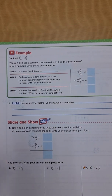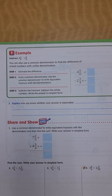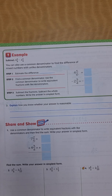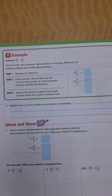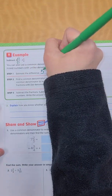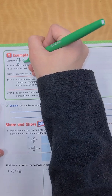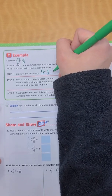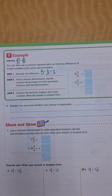This one's subtracting. I feel like the addition is a little bit easier than subtracting — that's just my personal opinion. So we have 4 and 5 sixths minus 2 and 3 fourths. You can use a common denominator to find the difference of mixed numbers with unlike denominators. Let's estimate: 5 sixths is close to 1, so 1 plus 4 gives me 5. Then 3 fourths is close to 1, so 1 plus 2 equals 3. So 5 minus 3 equals 2 — my answer is probably going to be around 2.